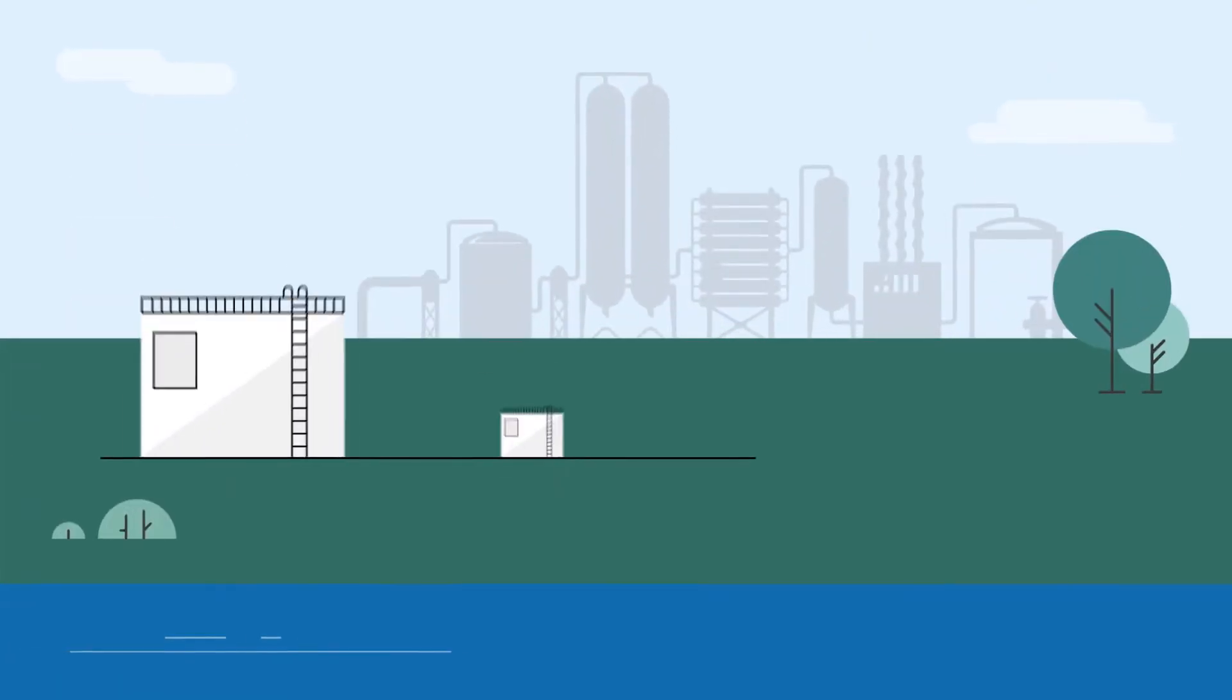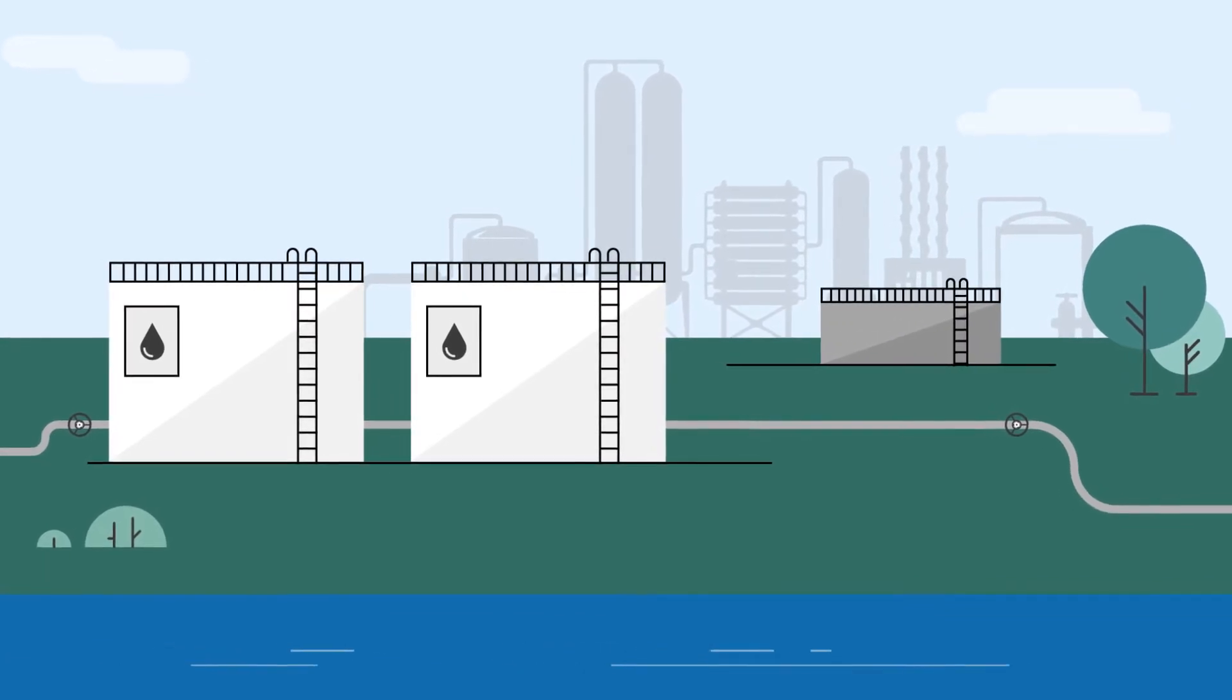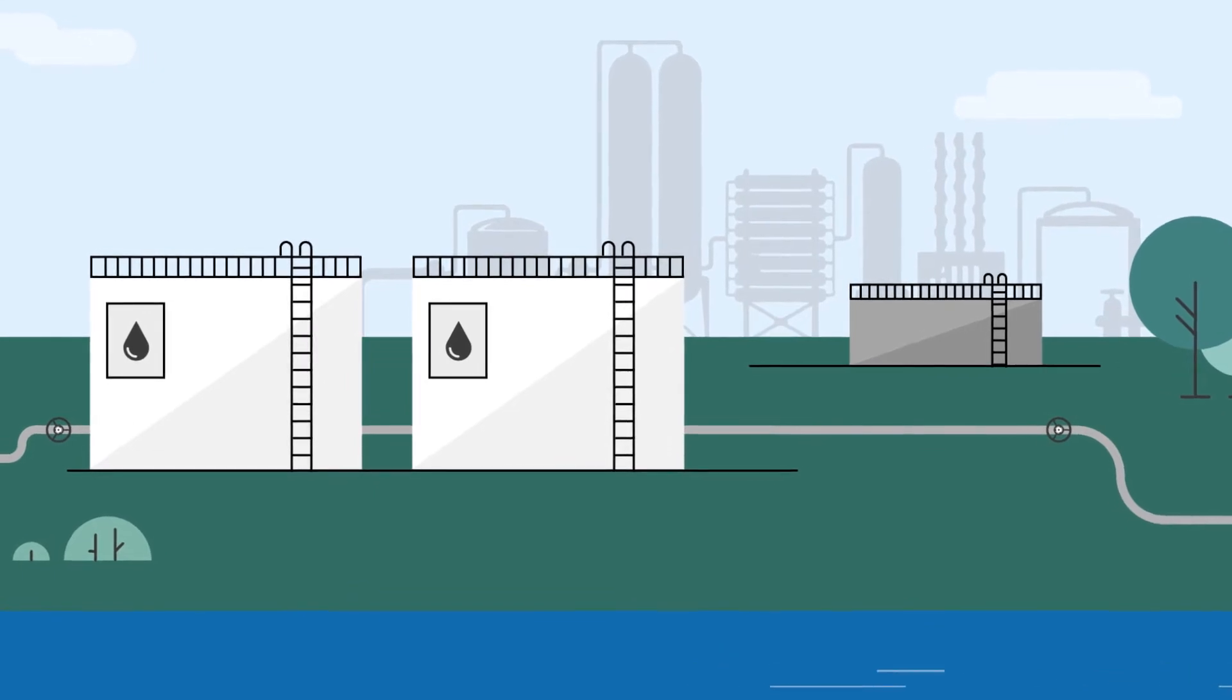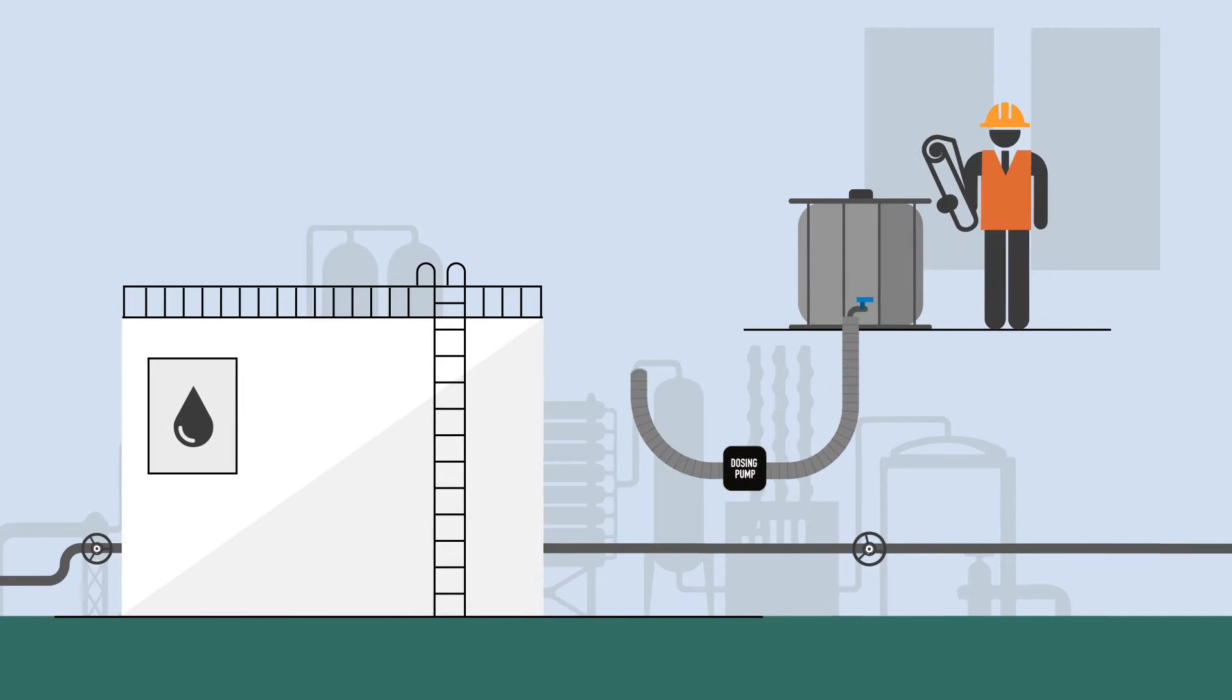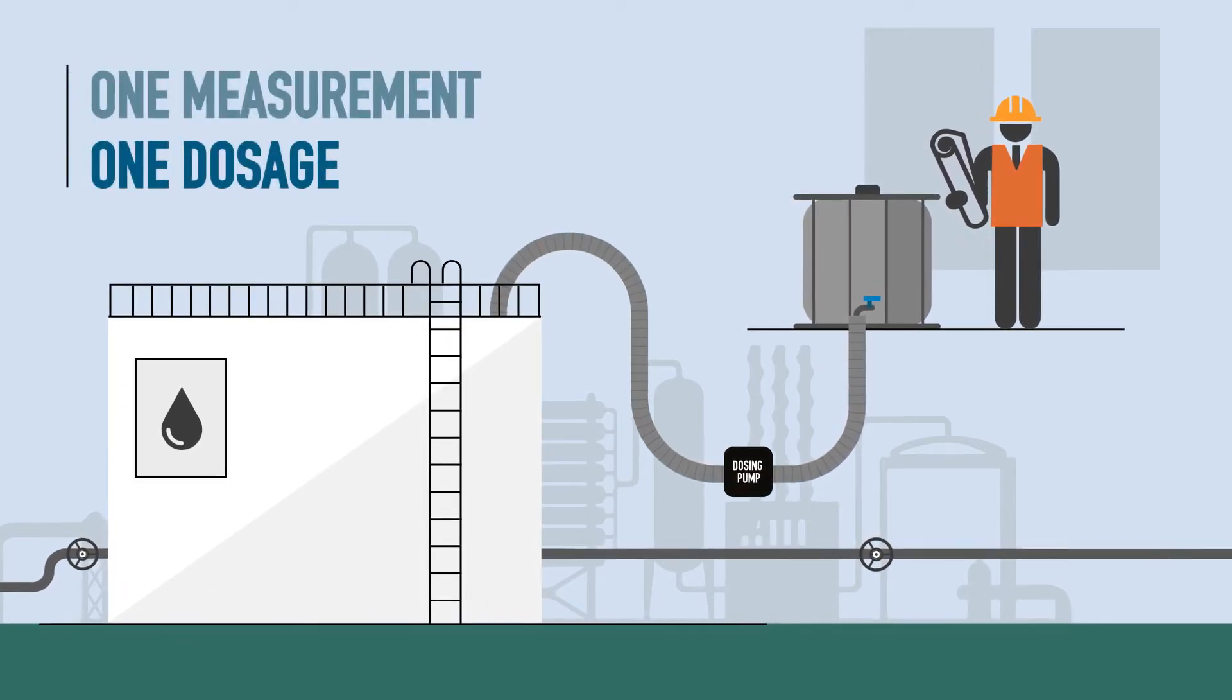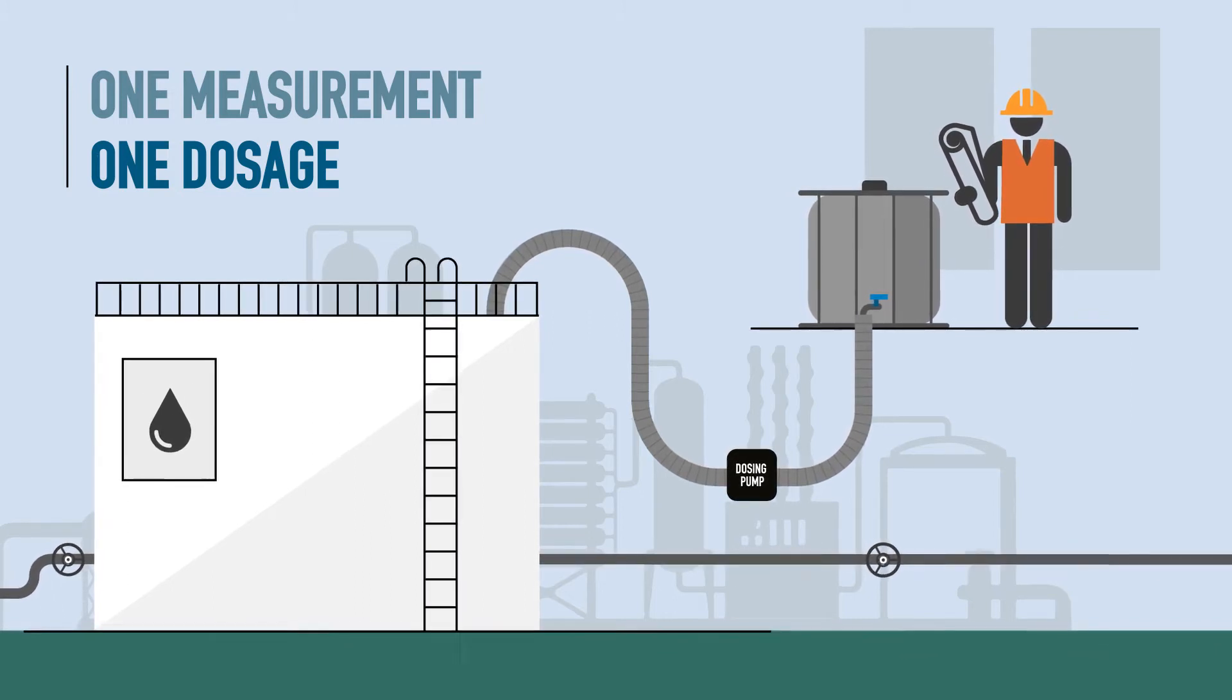Traditionally, industrial wastewater treatment systems usually control the dosage of chemical according to a turbidity measurement performed at the outlet of the sedimentation basin. That means after the sedimentation process and results in a considerable time delay in the chemical dosage control as compared to the changes in the water quality at the inlet of the process.